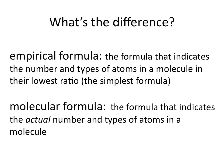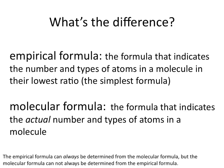What's the difference between an empirical and a molecular formula? The empirical formula indicates the number and types of atoms in a molecule in their lowest ratio — it's the simplest formula. The molecular formula indicates the actual number and types of atoms in a molecule. The empirical formula can always be determined from the molecular formula, but the molecular formula can't always be determined from the empirical formula.